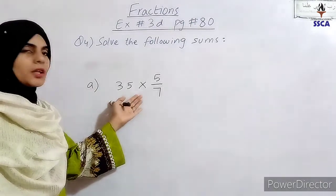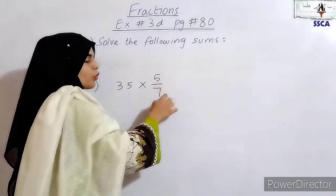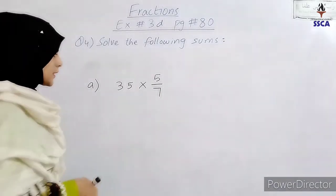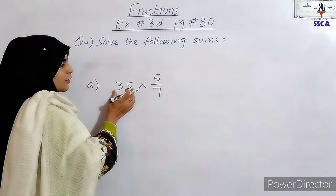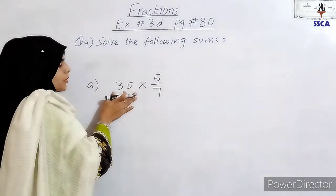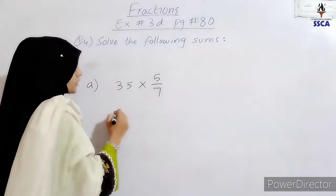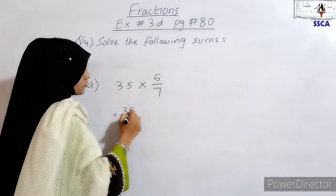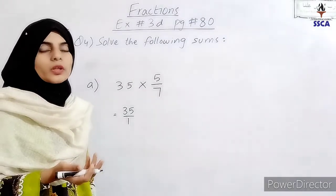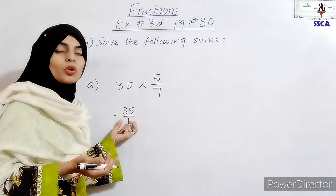In Part A, we have a sum given: 35 multiplied by 5 over 7. Let's start this multiplication. We know that 35 is a simple natural number. If we write a simple natural number, then we will write it as 35 over 1. You know that every number has a denominator of 1. We will highlight the 1 so that you don't have confusion.